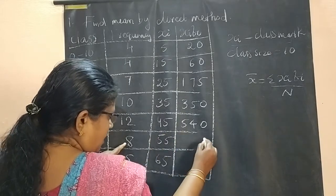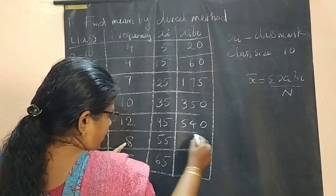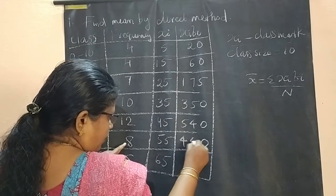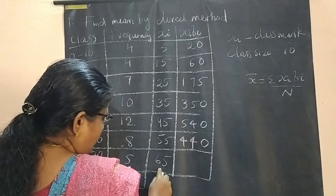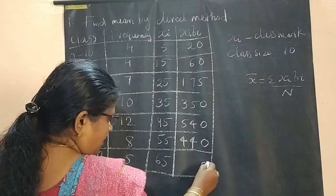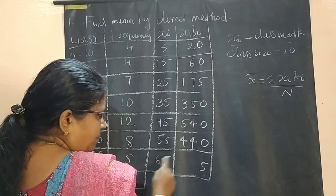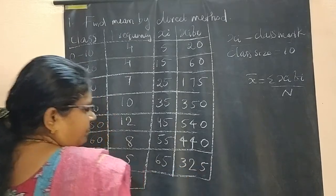8 × 55: 8 fives are 40, 8 fives are 40 + 4 = 44. 5 × 65: 5 fives are 25, 5 sixes are 30 + 2 = 32.